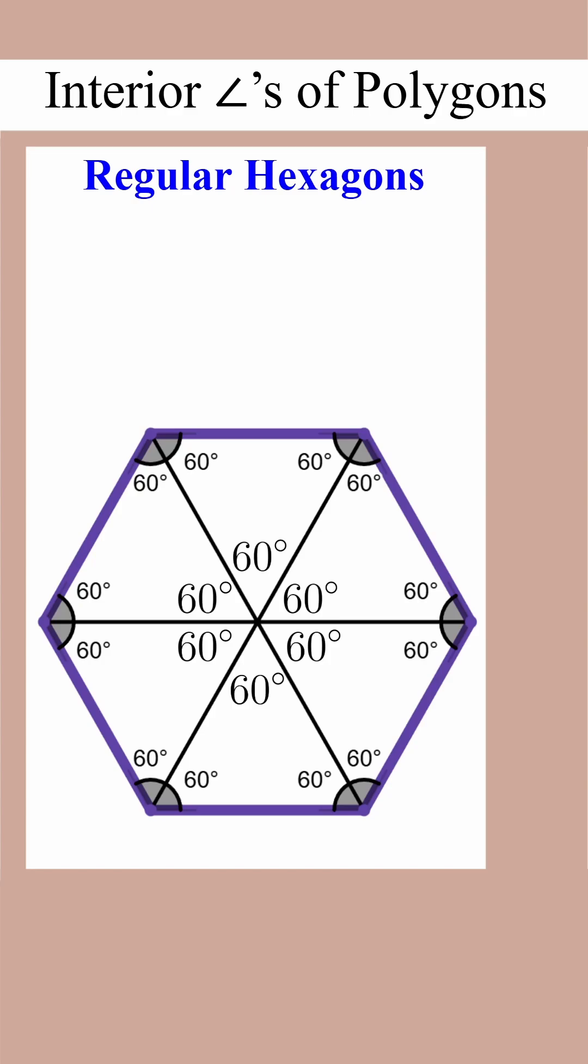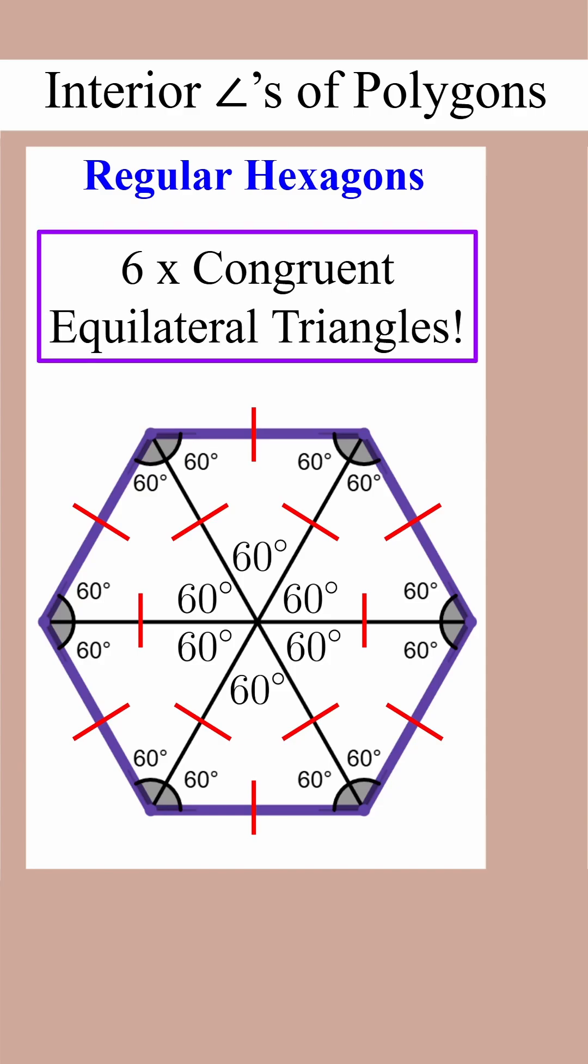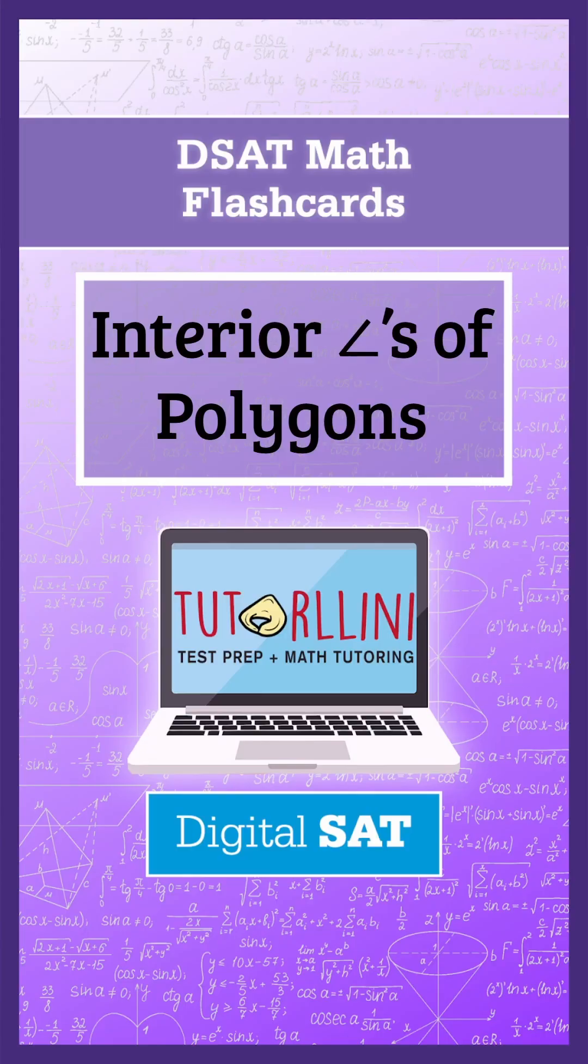That means they are all equilateral triangles, which means every single side, every single segment in this drawing is equal. So regular hexagons are made up of six congruent equilateral triangles. Notice how this is different from regular pentagons—the side lengths are equal to those circumradii. Pause this video and see if you can remember this important DSAT math concept.